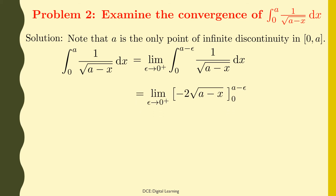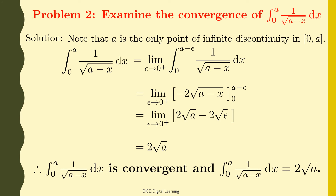This equals the limit of −2√(a − x) from 0 to a − ε as ε tends to 0 from the right, which equals the limit of 2√a − 2√ε as ε tends to 0 from the right, which equals 2√a. Therefore, the integral of 1/√(a − x) dx from 0 to a is convergent and its value is 2√a.